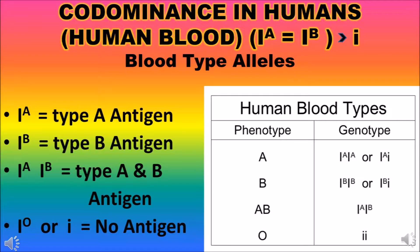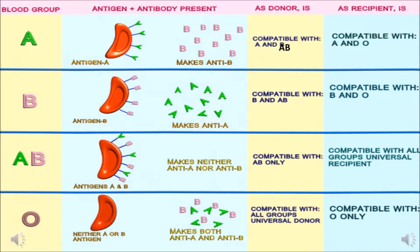Both A and B blood group alleles are dominant to O blood group, which is recessive. This table shows the type of antigen and compatibility of blood groups. Blood group A has A antigen, produces antibody B, and can receive blood from A and O. Blood group B has B antigen, produces antibody A, and can receive from B and O. Blood group AB has both A and B antigens and produces no antibodies, making it the universal recipient. Blood group O has no antigens but produces both A and B antibodies; it can only receive from O and is the universal donor.